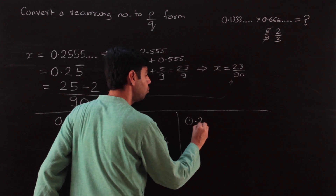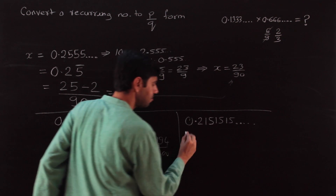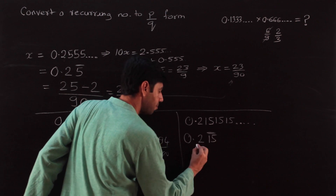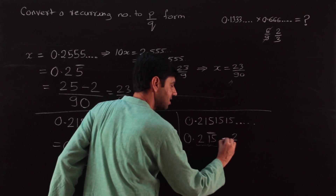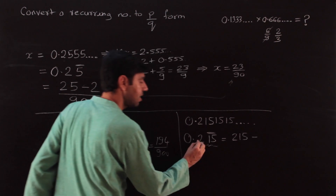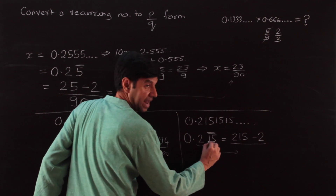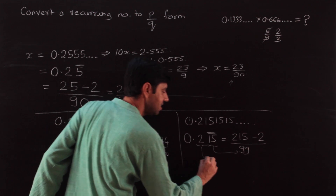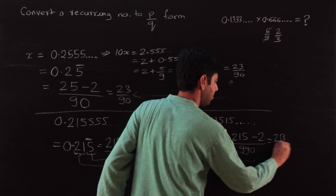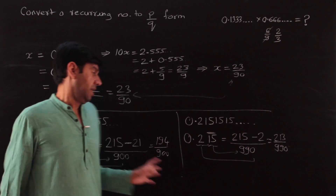Last example: 0.2151515... Here 0.2 is non-recurring and 15 recurs. Write 215 (the full number with recurring part once), subtract 2 (the non-recurring part) giving 213. Denominator: two recurring digits → two 9s; one non-recurring digit → one zero → 990. Answer is 213/990. Be careful here — this is where errors happen.